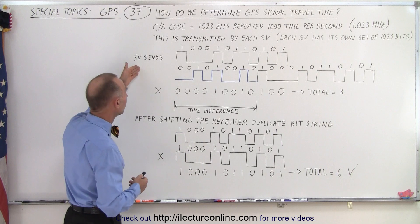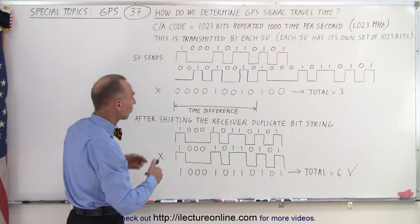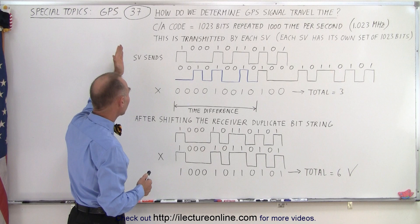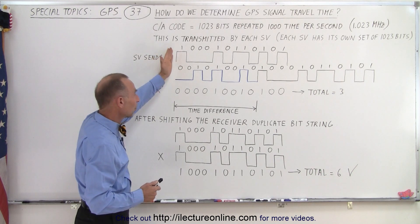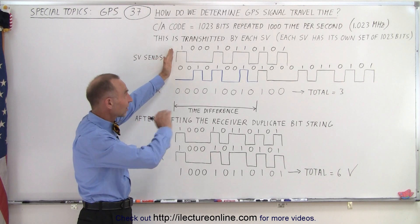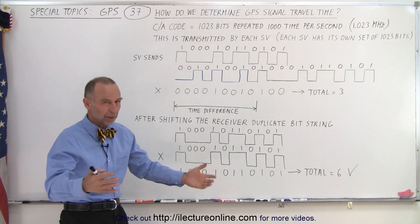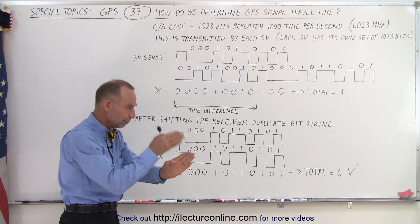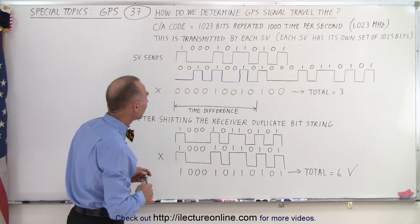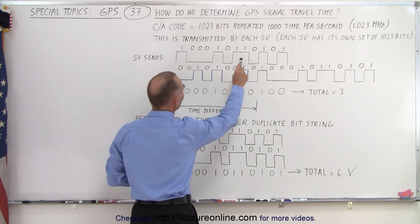Now the CA code looks something like this, it's a string of ones and zeros. When the SV sends it we have a specific moment in time when the signal is transmitted down to the receiver. Of course it's always being transmitted but we pick a point in time, and then notice we get ones and zeros.